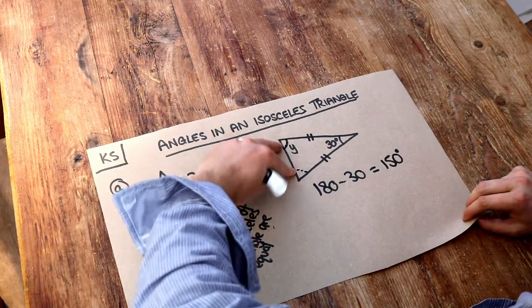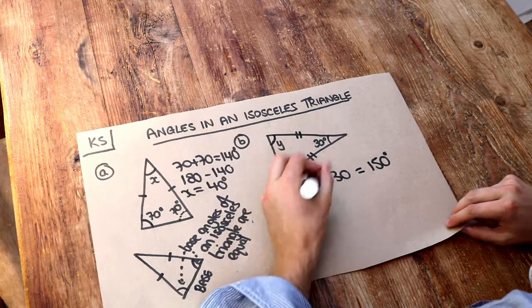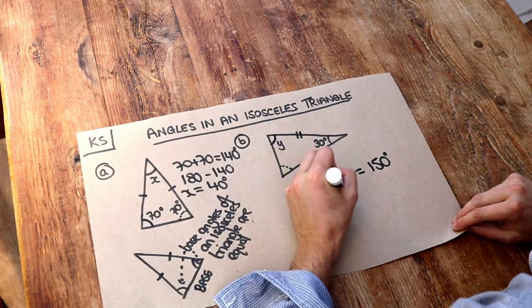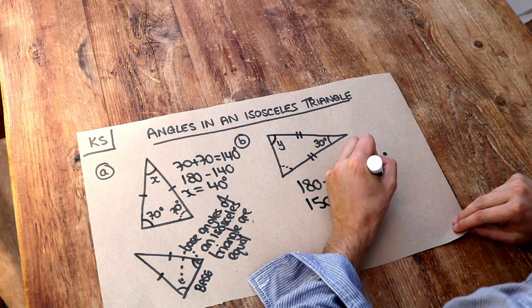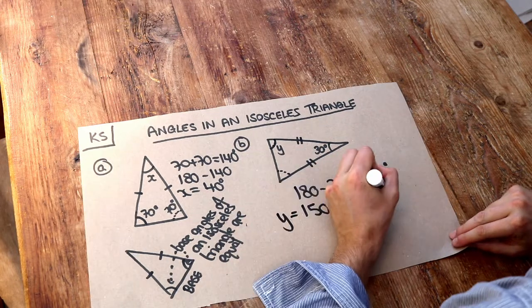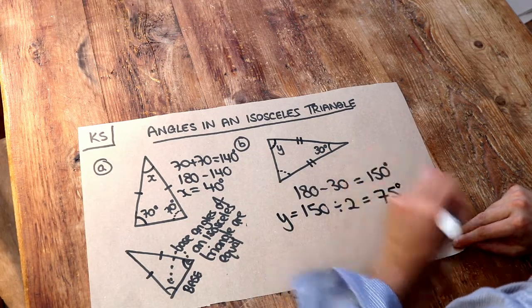Now they're both the same angle but they add up to 150 degrees and therefore we can just divide 150 by 2 and that means that y is equal to 75 degrees.